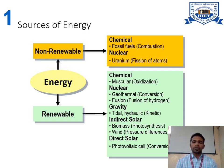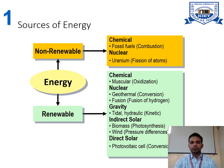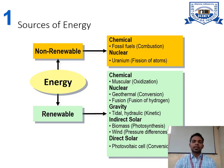In non-renewable energy there are basically two types: chemical and nuclear. Chemical includes fossil fuels — combustion type, where we burn fuel to produce energy. Nuclear includes uranium fission of atoms, which is also considered a non-renewable energy. In renewable energy we classify: chemical, nuclear, gravity, indirect solar, and direct solar.